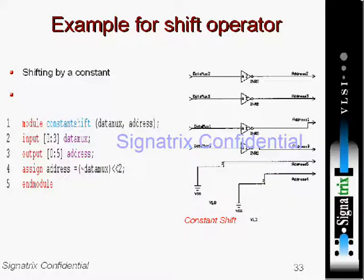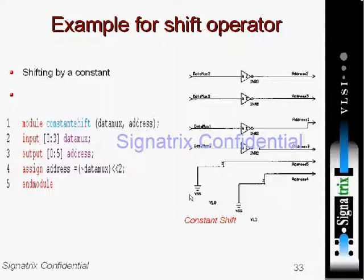Here is an example of a shift operator. As shown here, this is an example of a constant shift with data multiplexing and an address. We receive address on the other hand and we have inverters here. This example is for making a constant shift. Here, 2 is used as a constant to shift the data mux. Whenever we shift 2 values, it would be like grounded — we lose two bits.